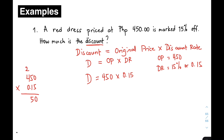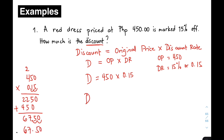Then add them: you have 0, 5, then 2 plus 5 is 7, and 2 plus 4 is 6. Now for the final answer, count the number of decimal places: 1 and 2. Count 1 and 2 from the right. The answer is 67.50. Therefore, the discount D is equal to 67.50 pesos. That's it for item number 1.